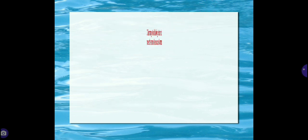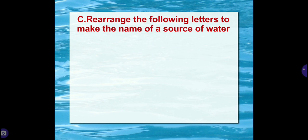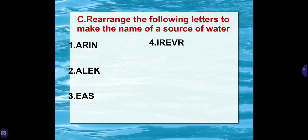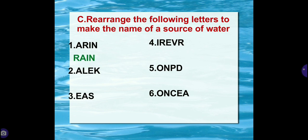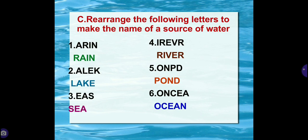Rearrange the following letters to make the name of a source. First is A-R-I-N, second A-L-E-K, third E-A-S, fourth I-R-E-V-R, fifth O-N-P-D, sixth O-N-C-E-A. Answers: first – rain, second – lake, third – sea, fourth – river, fifth – pond, and sixth – ocean.